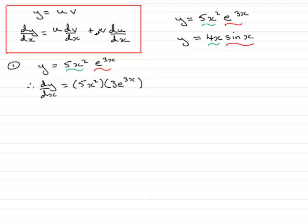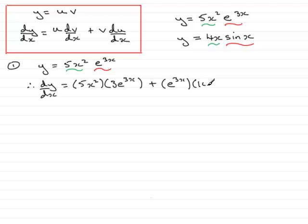Then we have plus v — the second function, e to the 3x, put in brackets — and we multiply it by du/dx, the differential of the first function 5x squared. The differential of 5x squared is 10x.